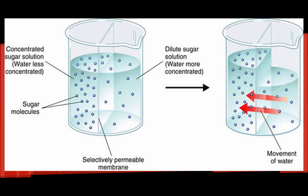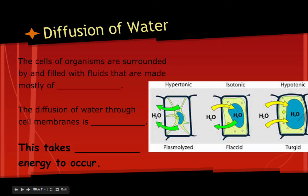Here we have a diagram explaining osmosis. You can see a selectively permeable membrane down the middle, with water on both sides. A solute — sugar molecules — has been added, with a bit more on the left side than on the right. This diagram explains three forms: hypertonic, isotonic, and hypotonic.